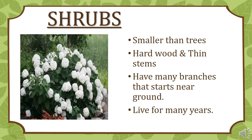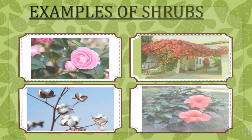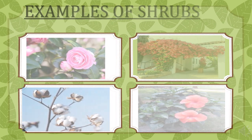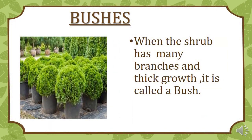Next, shrubs are smaller than trees. They have hardwood and thin stems. They have many branches that start near the ground and they live for many years. Examples of shrubs are rose, bougainvillea, cotton plant and hibiscus. When a shrub has many branches and thick growth, it is called a bush.